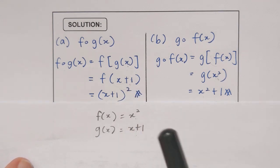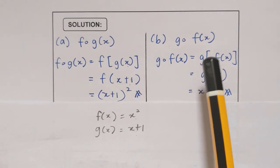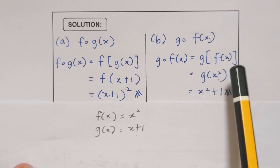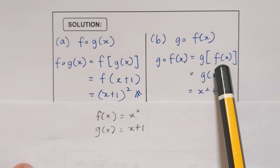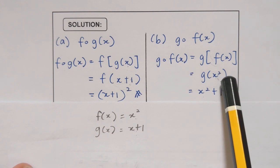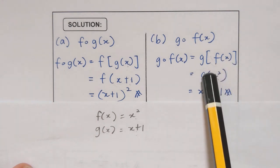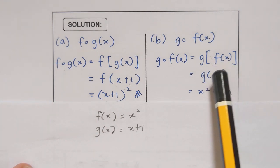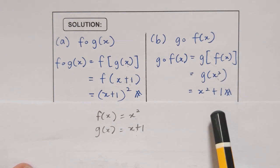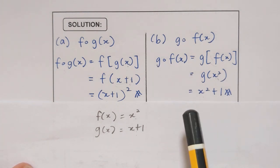Now we will proceed to b. We need to find g of f(x). You will do the same thing — you just substitute f(x). Our f(x) is x squared, so I put x squared here, and now I need to substitute x squared into our function g, which gives x squared plus 1. So this is the answer for g(f(x)).